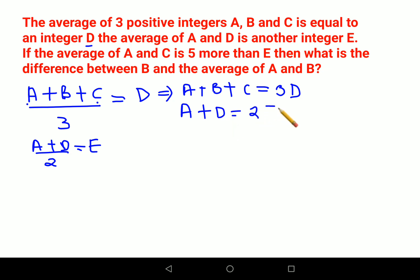They have said the average of A and C is 5 more than E. So (A+C)/2 = 5+E. Here I can say A+C = 10+2E.